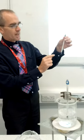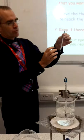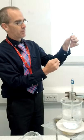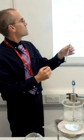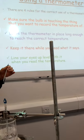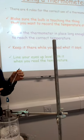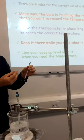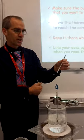So right now this bulb here is recording the temperature of the air in this lab. The second rule is that you need to leave the thermometer in place long enough for it to reach the correct temperature. It's no good just touching it on something and expecting it to immediately get to that temperature. You need to give it time.